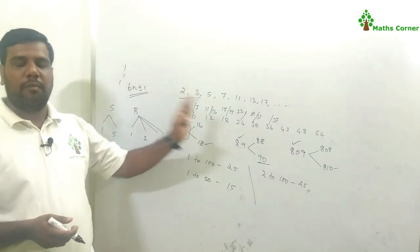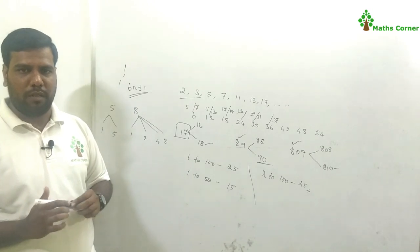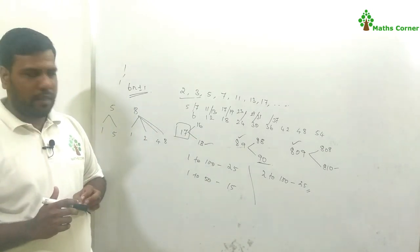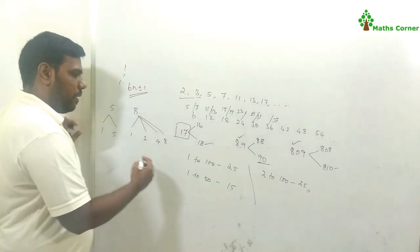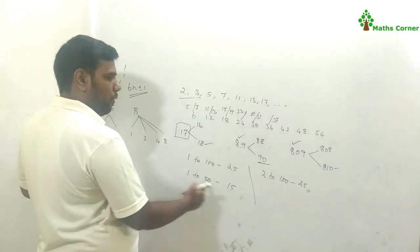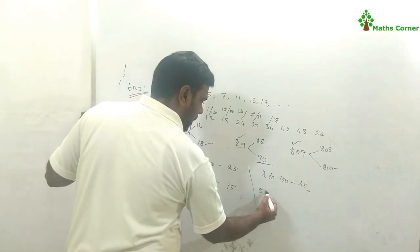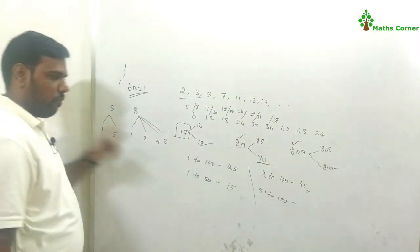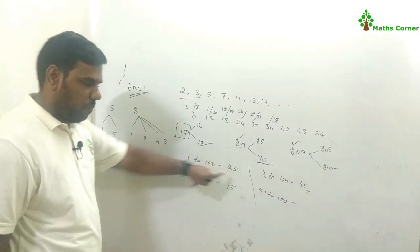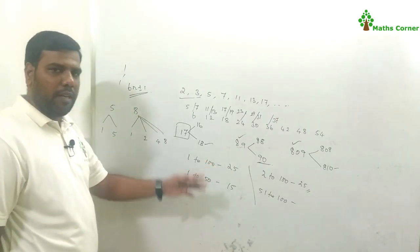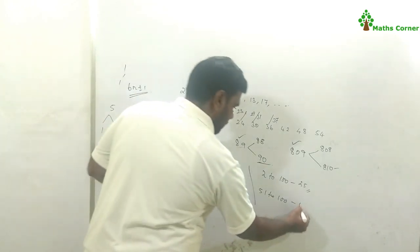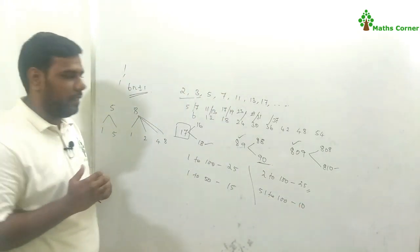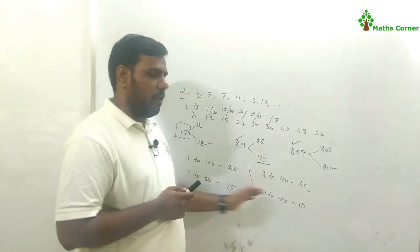From 1 to 100 there are 25 prime numbers — 10 prime numbers from 1 to 50, and the remaining 10 prime numbers from 51 to 100. So this may be a question with 4 options asking about prime numbers.